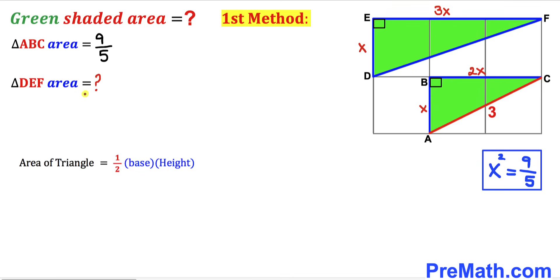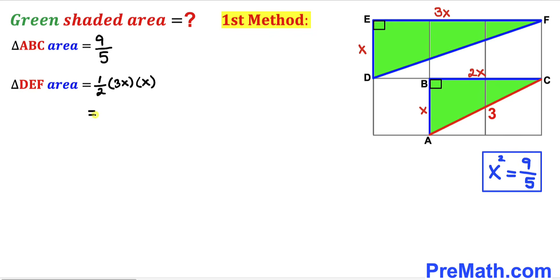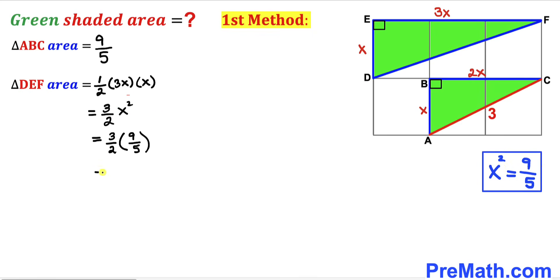Now let's calculate the area of right triangle DEF using the same formula. The base is 3x and the height is x, so the area equals one-half times 3x times x. Simplifying gives us 3/2 times x². Since x² equals 9/5, substituting that value gives us 27 divided by 10.